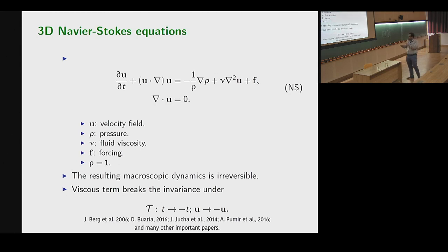What we have and what we know is the resulting macroscopic dynamics is irreversible, and this dissipation term in particular breaks the invariance under this transformation if you send T to minus T and U to minus U.